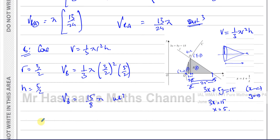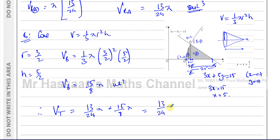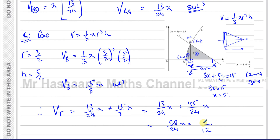The total volume is 13π/24 + 15π/8. Converting to a common denominator of 24: 13π/24 + 45π/24 = 58π/24. Simplifying by dividing by 2 gives 29π/12 cubic units — that is the final answer.